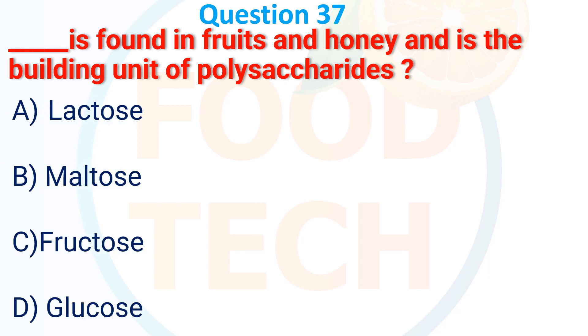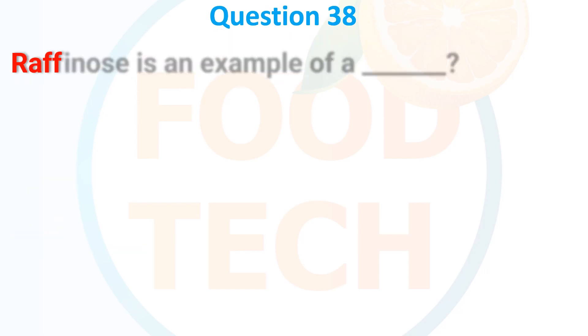Question 37: Which is found in fruit and honey and is the building unit of polysaccharide? A. Lactose, B. Maltose, C. Fructose, D. Glucose. The answer is C. Fructose.